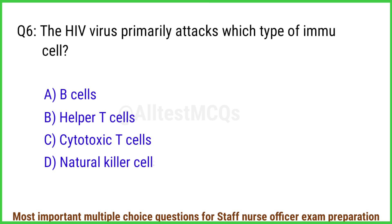Q6. The HIV virus primarily attacks which type of immune cell? The right answer is option B: Helper T-cells.